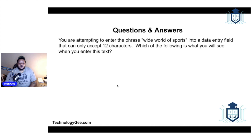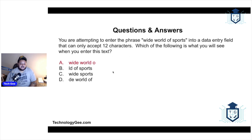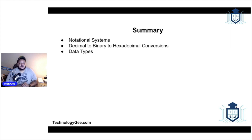Next question: you're attempting to enter the phrase 'wide world of sports' into a data entry field that can only accept 12 characters. Which of the following is what you will see? The correct answer is 'wide world o'. Starting from W — counting each character including the spaces — you get exactly 12 characters: W-I-D-E (4), space (5), W-O-R-L-D (10), space (11), O (12). Those 12 characters, including the two spaces, are all that will be accepted.